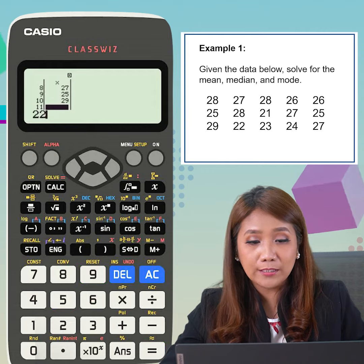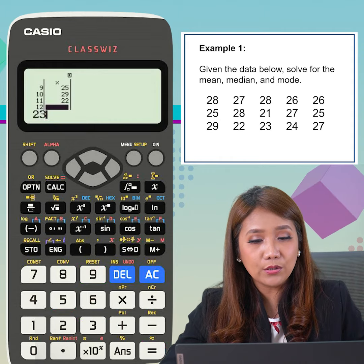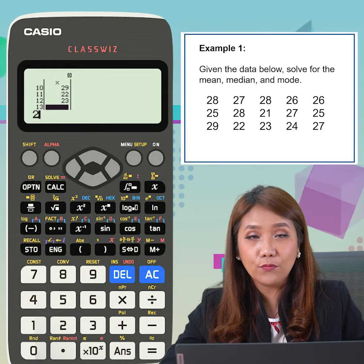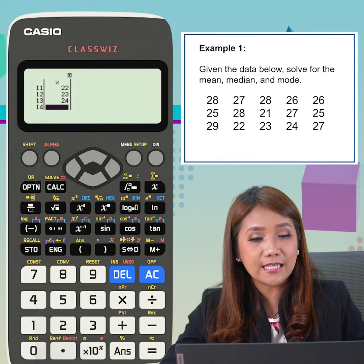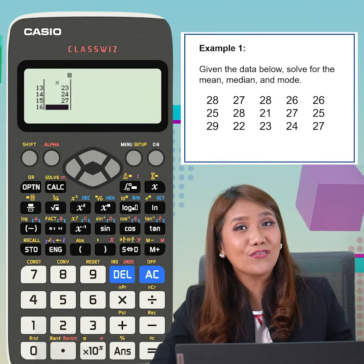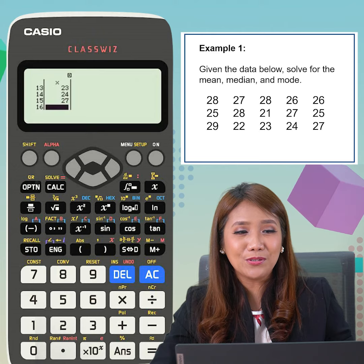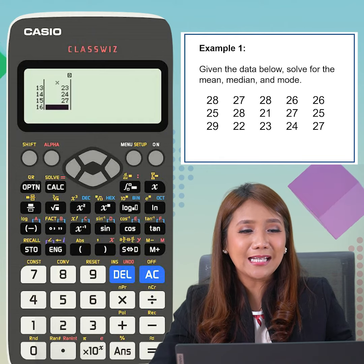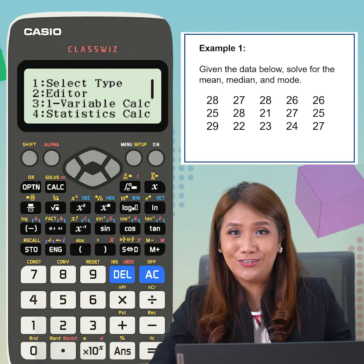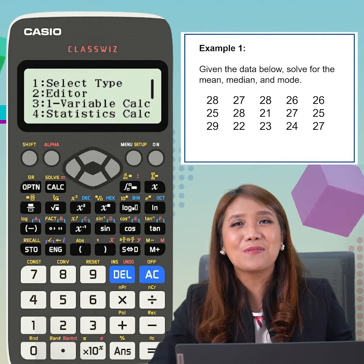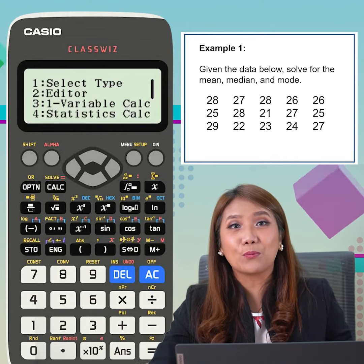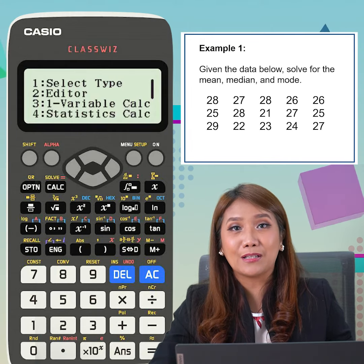Continue entering: 29, 22, 23, 24, and 27. Once all values are encoded, we click on option. Then, we select 3 for one variable calculation.